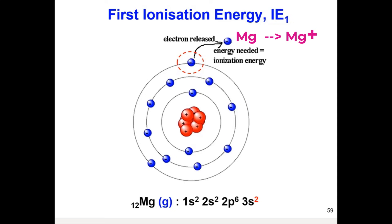If we remove one electron from the magnesium atom, a magnesium ion will be formed, now left with only 11 electrons. Since the number of protons remains 12, the overall charge of the magnesium ion is positive 1. There is attraction between the negative charge of the valence electron and the positive charge of the protons in the nucleus, so the process of removing electrons from the atom requires energy to overcome these attraction forces.